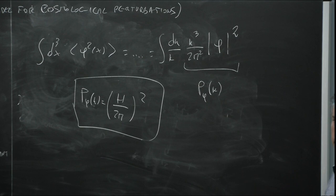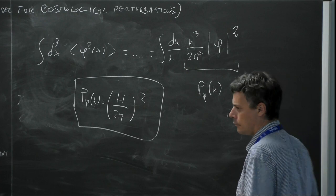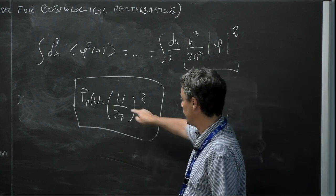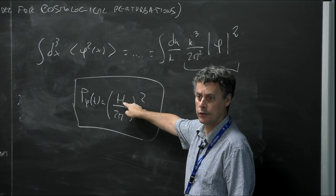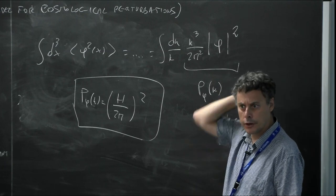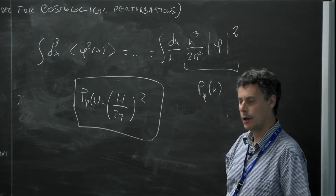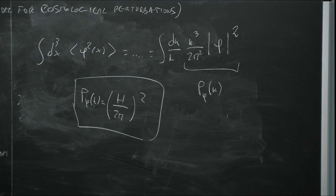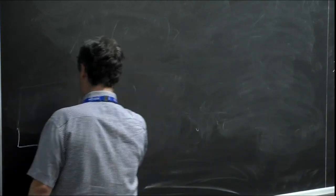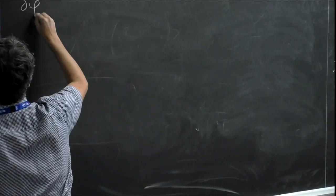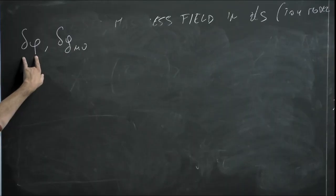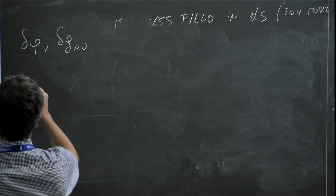This is scale-invariant and constant — these are the properties I was telling you yesterday. In reality, inflation is not exactly de Sitter, so H decreases during inflation. This tells me the power decreases, and I should evaluate it at horizon crossing, so modes that cross the horizon at different times will have different power. However, this is not the full calculation — when you add the metric perturbation the calculation becomes more complicated, and one ends up with the spectral tilt and tensor-to-scalar ratio I mentioned yesterday.